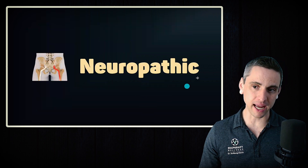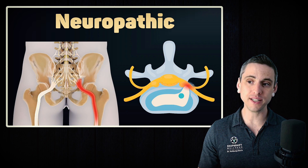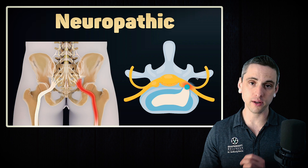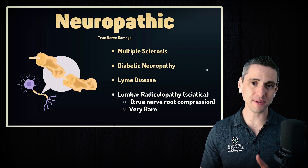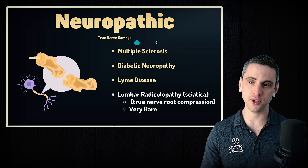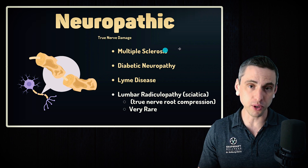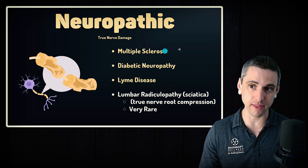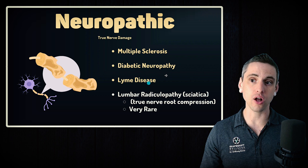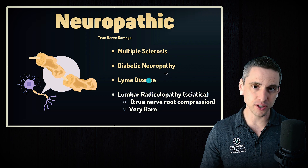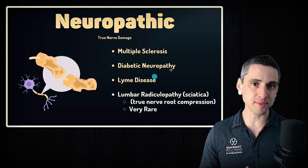Next up, neuropathic pain — this is true nerve pain. A lot of people are worried about sciatica due to a true disc herniation with true nerve compression. A lot of people think they have neuropathic pain, but they do not. Examples of true neuropathic pain — actual nerve damage — would be conditions like multiple sclerosis, where an autoimmune condition causes real neuropathic pain, or diabetic neuropathy, peripheral neuropathy, or Lyme disease. These are all legitimate nerve damage conditions — some autoimmune, some infectious, some metabolic — but regardless, the nerves are undergoing some type of real damage.